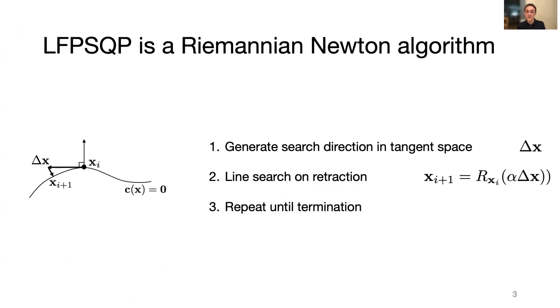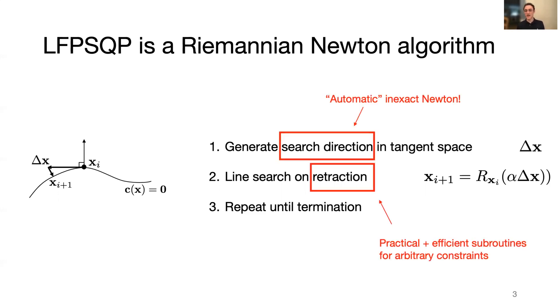Now, I have to skip many of the interesting technical details for time, but LFP-SQP is special because it features inexact Newton steps, avoiding explicit Hessians with little effort on part of the user, and it uses efficient retraction subroutines for arbitrary implicit constraints.